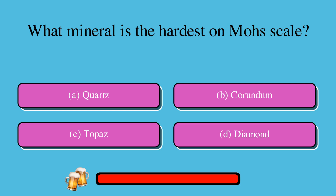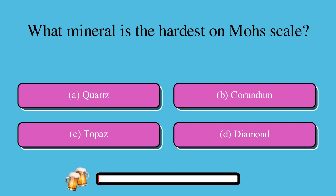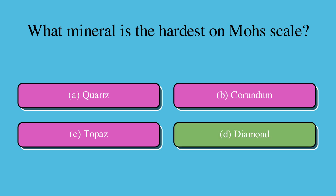What mineral is the hardest on the Mohs scale? A. Quartz, or B. Corundum, or C. Topaz, or D. Diamond? The correct answer is D. Diamond.